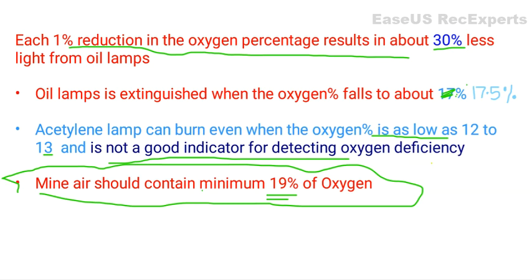Since acetylene lamps can still burn at 12 to 13% oxygen, if the oxygen level is at 15% or 17% — which is already dangerously low for mine standards — the lamp will still burn. Therefore, acetylene lamps are generally not a good indicator for detecting oxygen deficiency in mines.